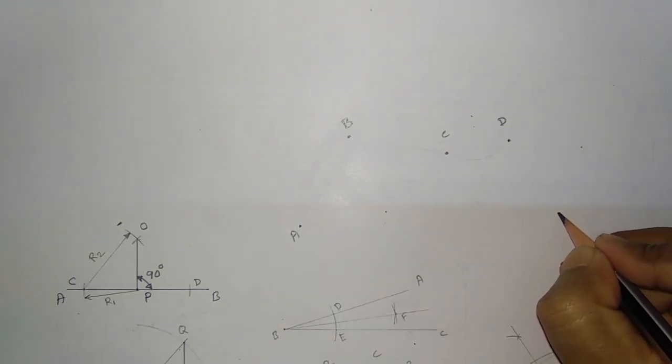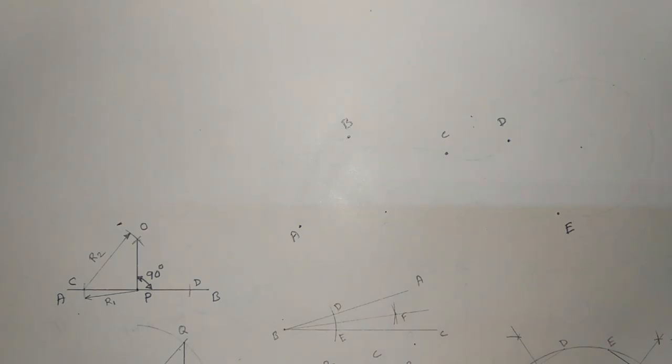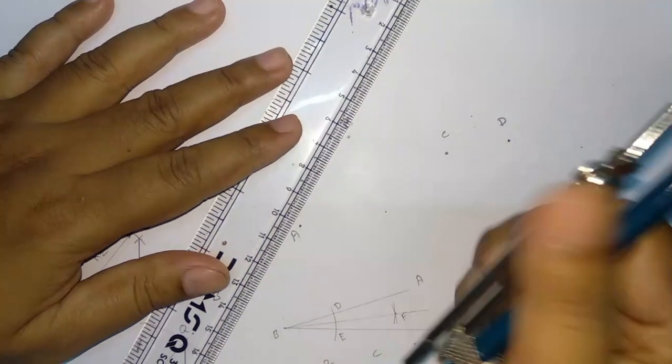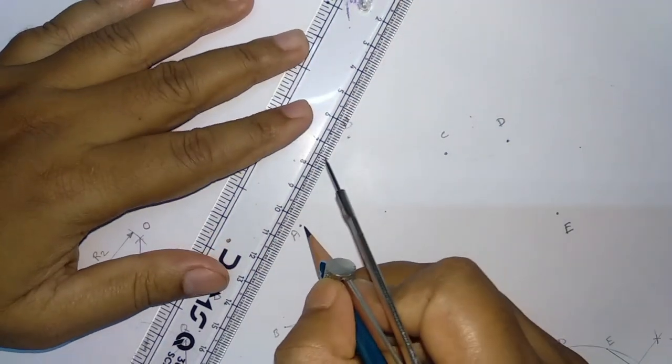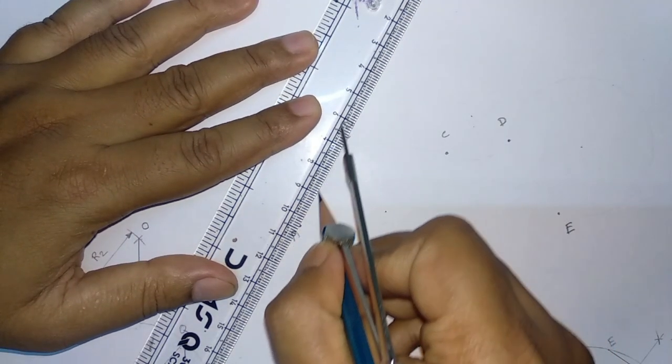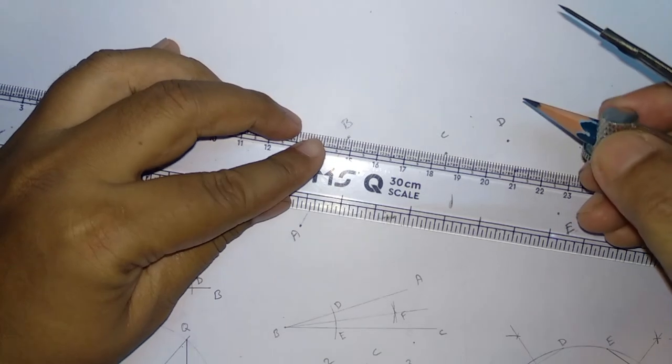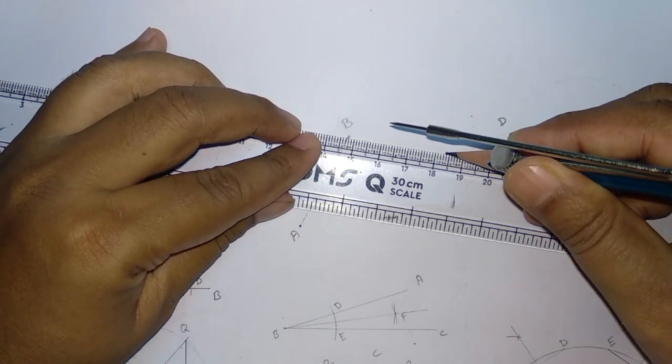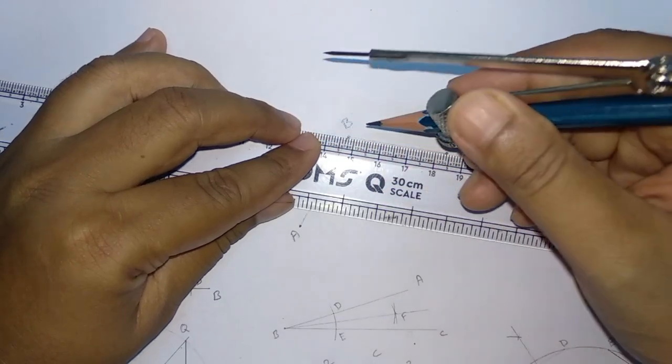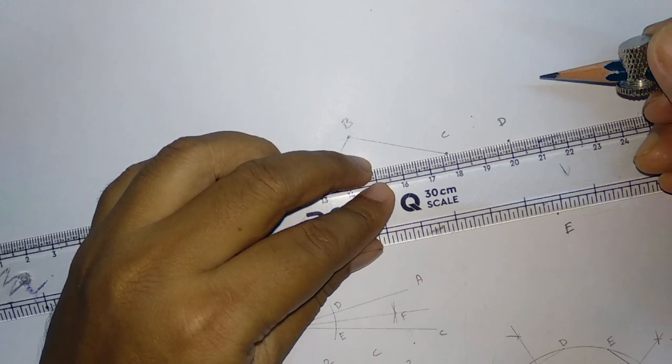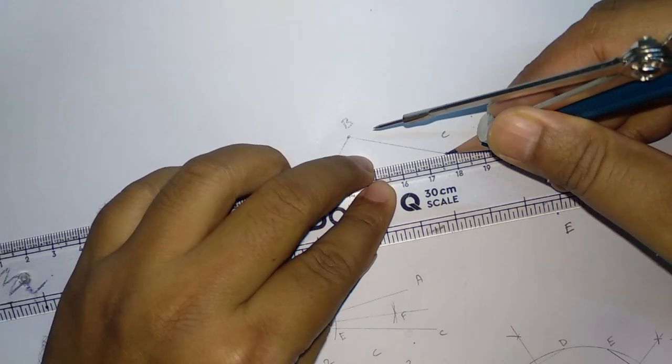Now, first work is to join this line, join this point with line. So these lines are nothing but behaving like a chord. Now from C to D, you have to join from C to D.